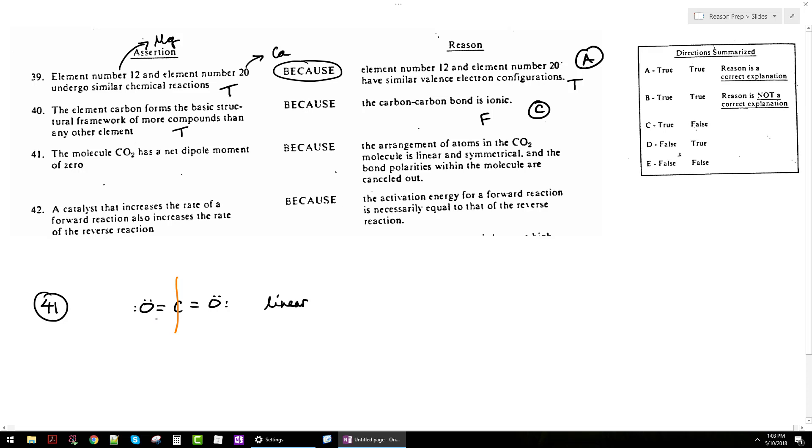This will be nonpolar, which is what the question is asking, because there's no way to divide this molecule to make it asymmetrical. No matter how I slice this, I get symmetry. I don't have a positive portion on one side and negative on the other, so I have no net dipole. This is true. When they say net dipole moment of zero, they're basically saying it's nonpolar, and that is true.